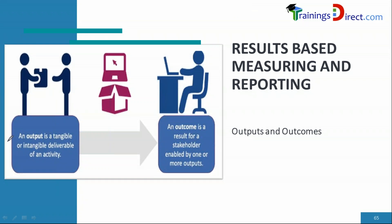A couple of simple concepts from ITIL Foundation: output and outcome. Outputs are tangible or intangible deliverables — something physical or something electronic — like a software release, a contract document, a fireproof safe, or a backup of data from a certain location. An outcome is the result for a stakeholder enabled by one or more outputs. For example, if we are taking backups of data, the outcome could be evidence for archived records.